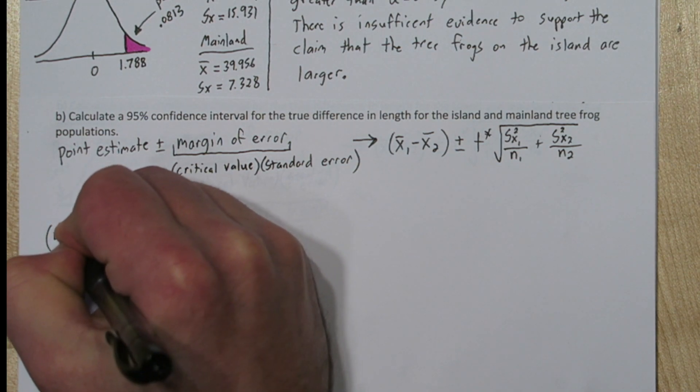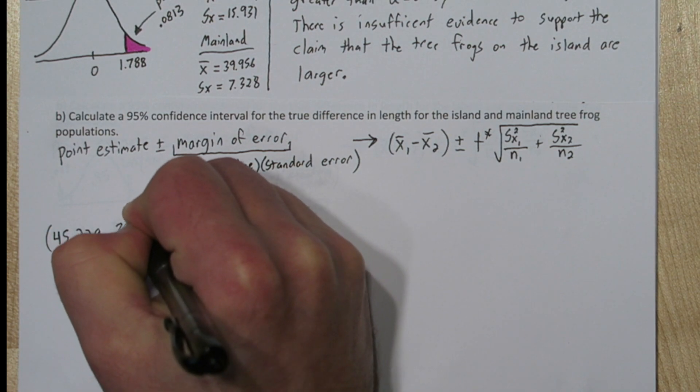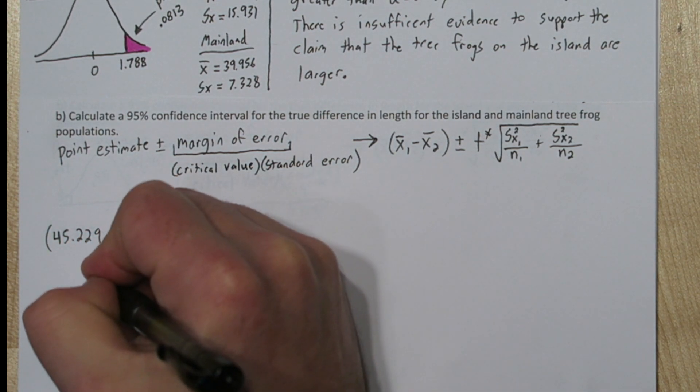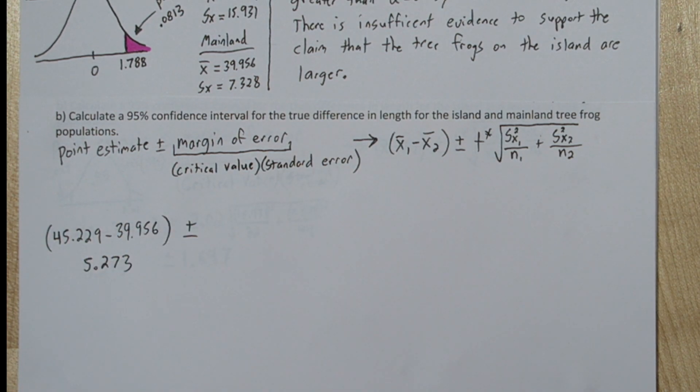So our mean frog length on the island was 45.229, and we're going to subtract out the mainland mean frog length. So our point estimate is 5.273. That's the difference between the sample means.